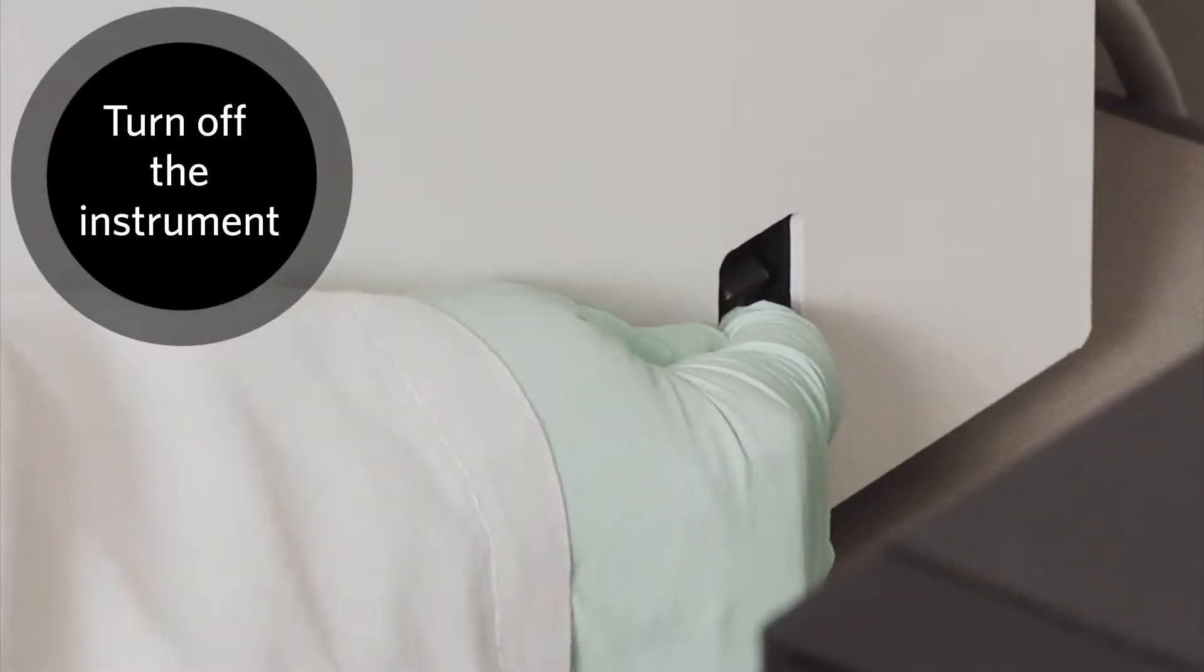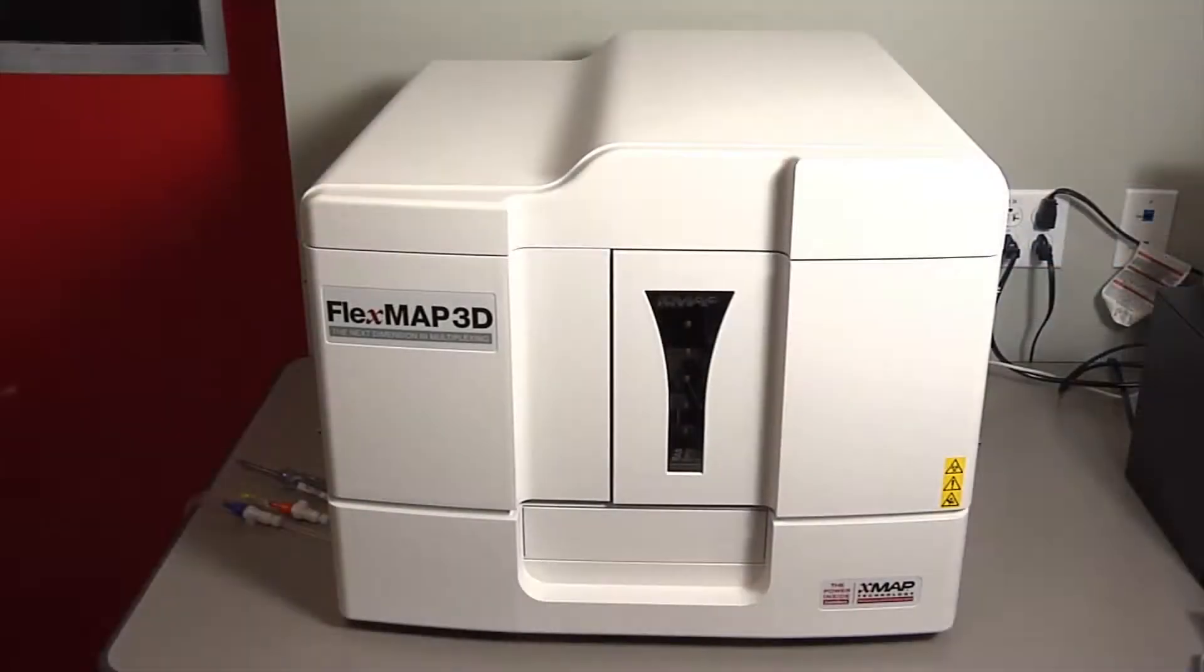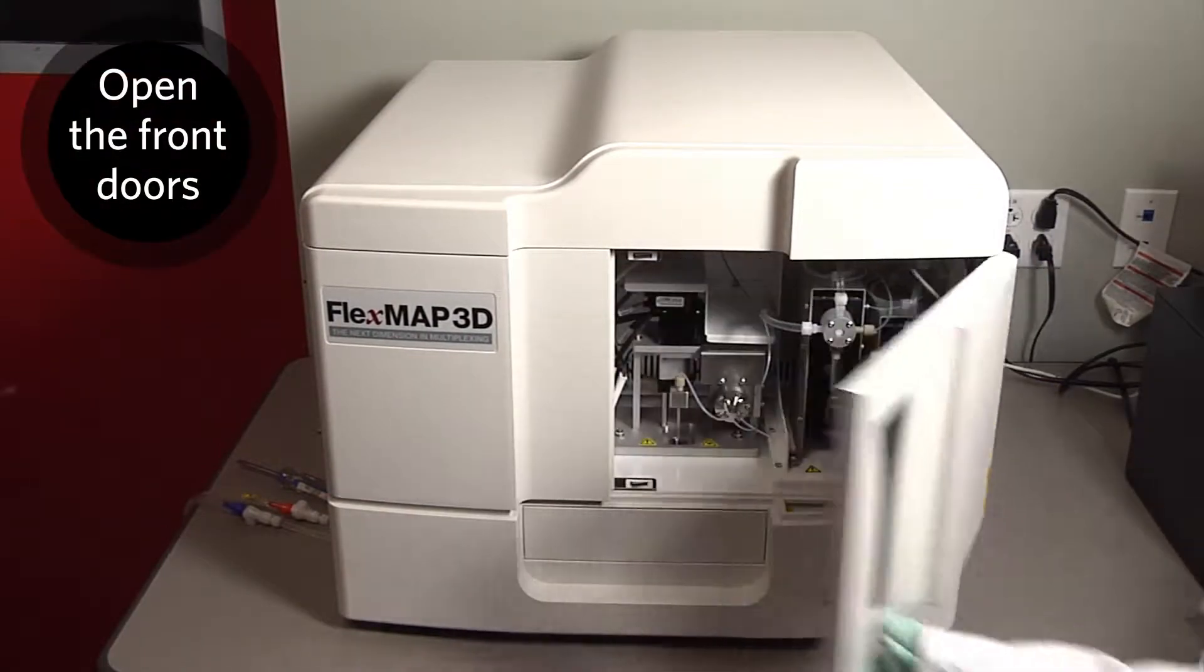Turn off the FlexMap 3D instrument and unplug the power cord. Open the front access doors.